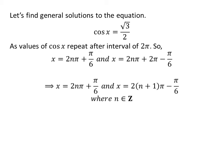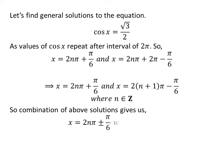Further simplification gives us the general solutions as 2 times n times pi plus pi upon 6, and 2 times n plus 1 times pi minus pi upon 6. Combination of the above solutions gives us the general solution of the equation as 2 times n times pi plus or minus pi upon 6, where n is an integer.